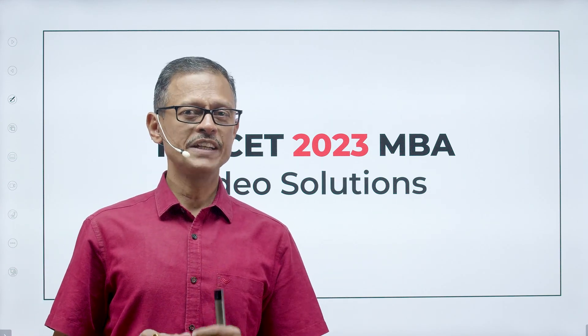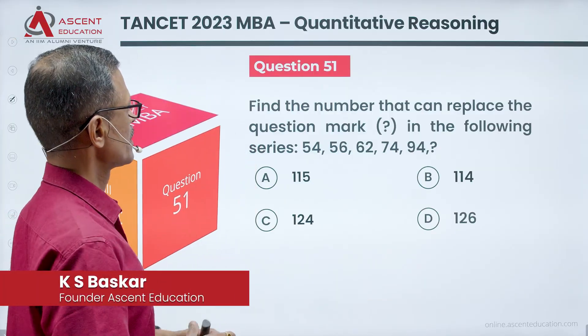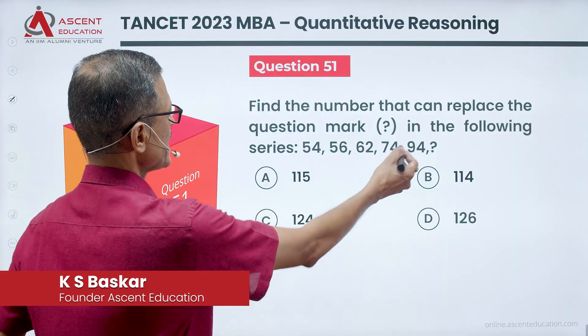TANCET 2023 MBA Question Paper video solution. Aptitude Section Question No. 51. This is a number series, Logical Reasoning Question. What is the next number in the series?